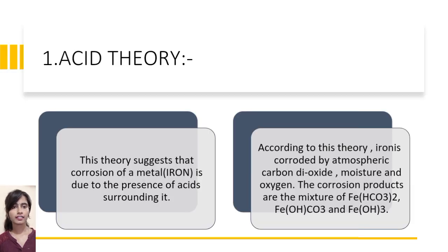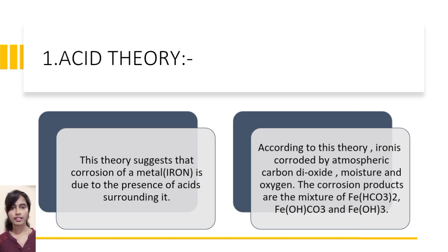Acid theory. This theory suggests that corrosion of the metal is due to the presence of acid surroundings. According to this theory, iron is corroded by atmospheric carbon dioxide, moisture, and oxygen. The corrosion products are a mixture of iron bicarbonate, iron oxide, and hydroxide. So this was the acid theory.